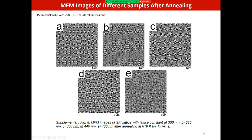The material used was 15-nanometer-thick permalloy with 220 and 80 nanometer lateral dimensions for the bar magnets, arranged in an array. They varied the lattice constant from 300 to 440 and 480 nanometers. Before measurements, they annealed the sample at 818 Kelvin for 15 minutes, then cooled to room temperature, after which the images were taken.